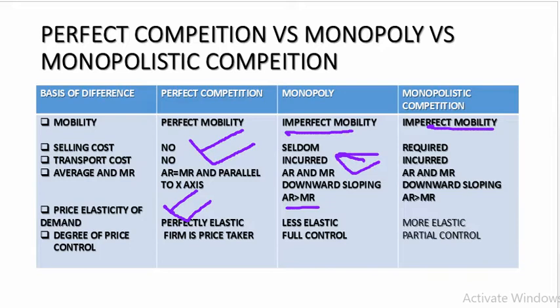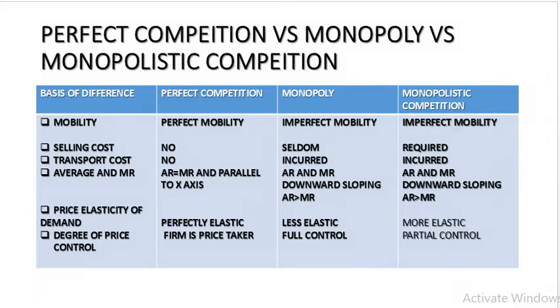Under perfect competition, the price is determined by the industry, so the firm is the price taker. Under monopoly, the monopolist has full control over pricing. Under monopolistic competition, firms have partial control because of product differentiation.